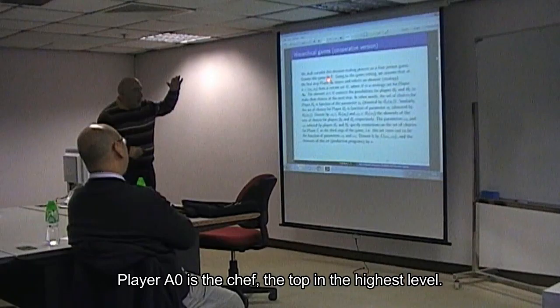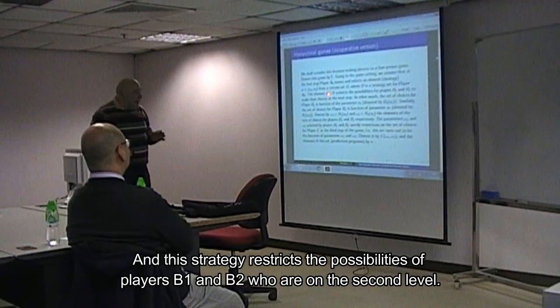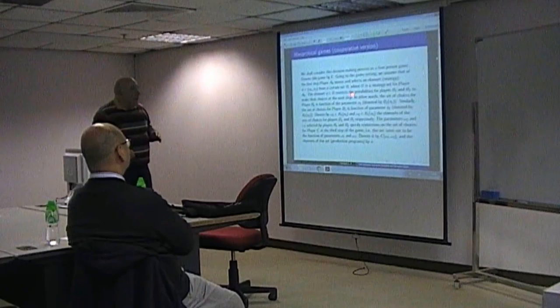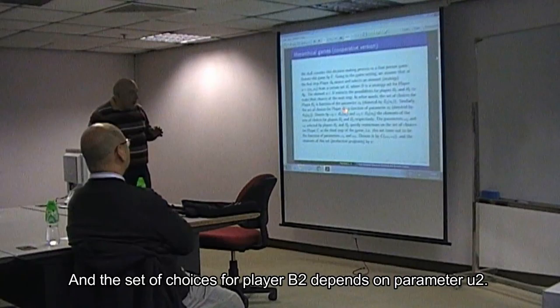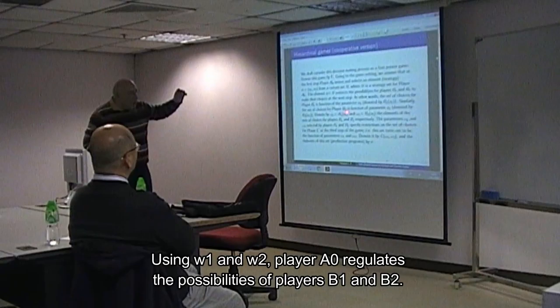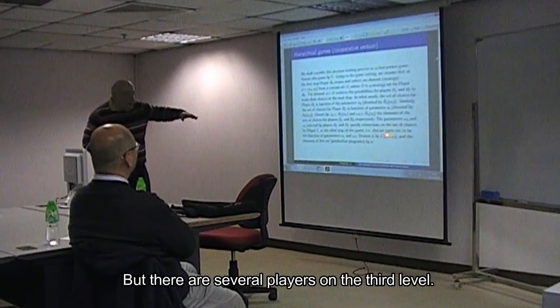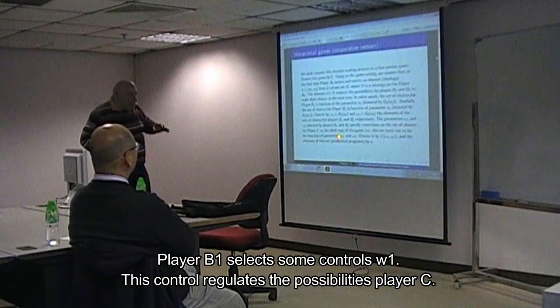Player A0 is the chief, the top chief. He is on the highest level. He selects a strategy U1, U2 from his strategy set, and this strategy restricts the possibilities of players B1 and B2, who are on the second level. The set of choices for player B1 depends upon the parameter U1, and B2 depends upon the parameter U2. Using U1 and U2, player A0 regulates the possibilities of players B1 and B2. Player B1 selects some control W1, and with this control he regulates the possibilities of player C.